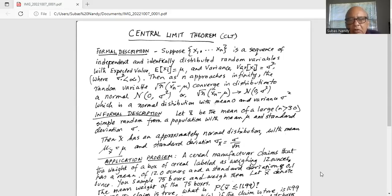Where sigma squared is less than infinite. Then as n approaches infinity, the random variable square root of n times xn bar minus mu, where xn bar is a sample average.